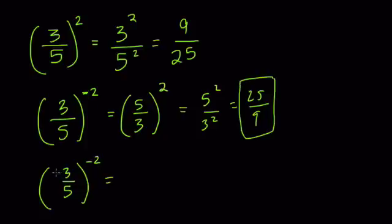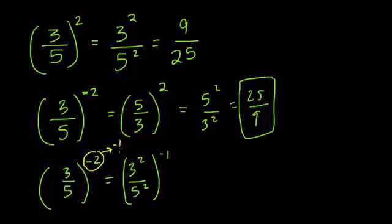Or here, instead of flipping it first, we can square it first. So we get 3 squared over 5 squared, and this would be to the negative 1 power. Because if you think about these exponents, it's true that negative 2 can really be thought of as negative 1 times 2. Those are equivalent. And here, we've applied the 2, we've squared it, but we haven't applied the negative 1, which connects to what we did before. When we flipped the fraction, that's like applying the negative 1 reciprocal and then squaring it.